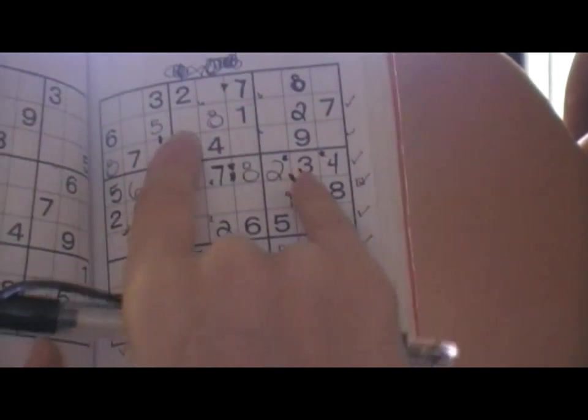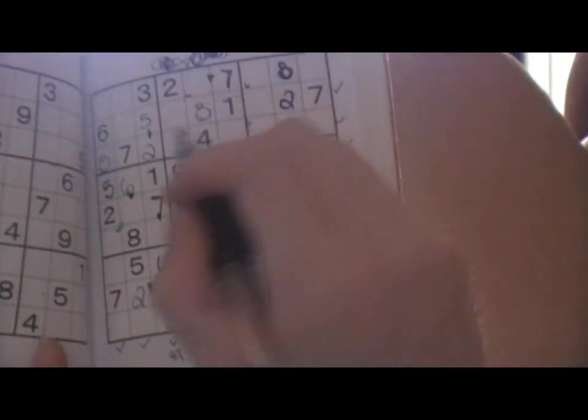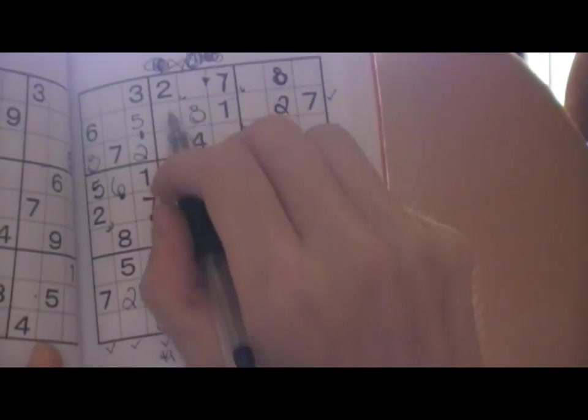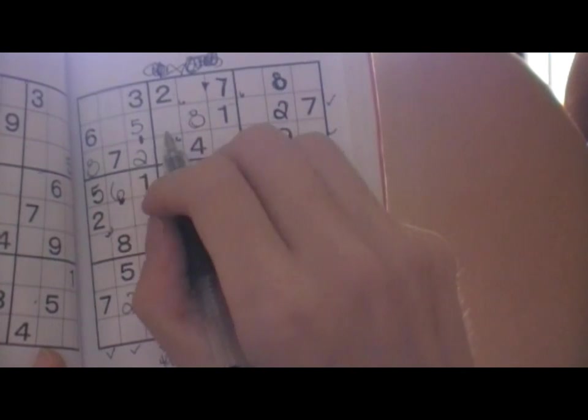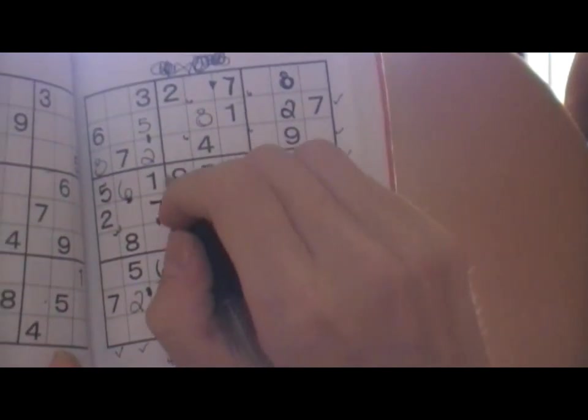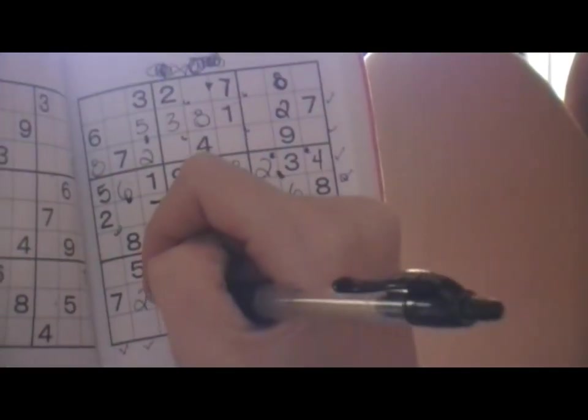Also, you can find it out, if you want to triple check, you can count it and whatever's missing. So, it has a one, it has a two. It needs a three. It has a four, a five, a six, a seven, an eight, and a nine. Okay? So, if you only need one number, that's what it is. Right?